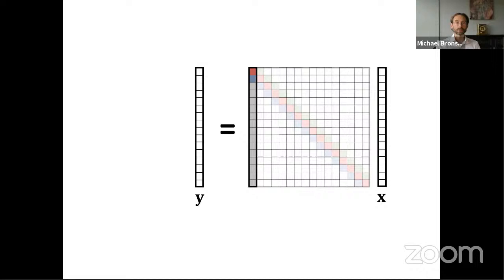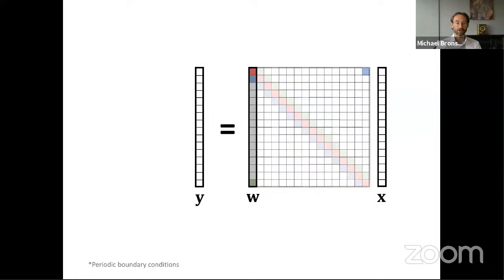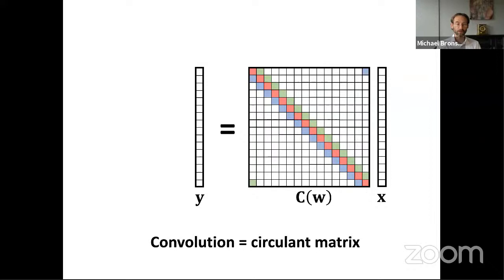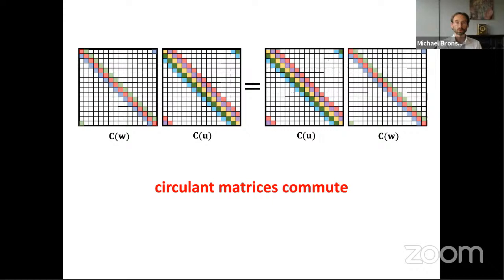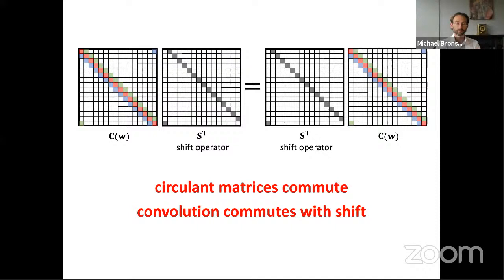If we look carefully at the convolution matrix, it is formed by taking one column and replicating it shifted by one position — with periodic boundary conditions, this shift wraps around. We call such matrices circulant or Toeplitz matrices. What do we know about circulant matrices? Unlike general matrices, the product of circulant matrices is commutative — they commute under multiplication. In particular, they commute with shift. The shift operation is a particular circulant matrix that moves a vector by one position. This is what we call shift-equivariance: it doesn't matter if we first apply the shift and then the convolution or the other way around. Some books call this shift invariance, but the correct mathematical term is equivariance.